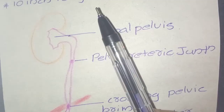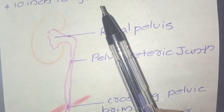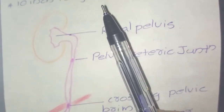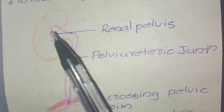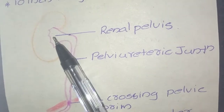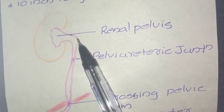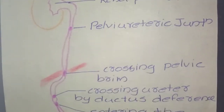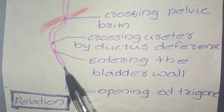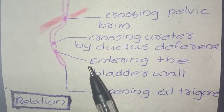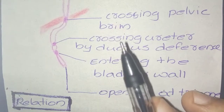For the course, it begins within the renal sinus as a funnel-shaped dilation called the renal pelvis, which is shown here. It courses downward and reaches the trigone, which is present in the urinary bladder.